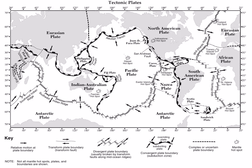We also have a third type of convergent boundary called a collision zone — continental to continental. The best example would be India crashing into the Eurasian plate, where the Himalayas are forming. Convergent boundaries can be seen with their symbol in the reference table, and probably the most famous example we'll discuss is the Peru-Chile Trench on the west coast of South America — a subduction zone where the oceanic Nazca plate meets the continental South American plate. That's where the Andes Mountains are, with lots of volcanoes and earthquakes.